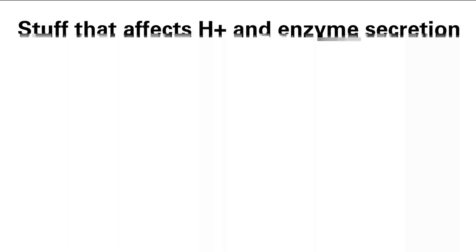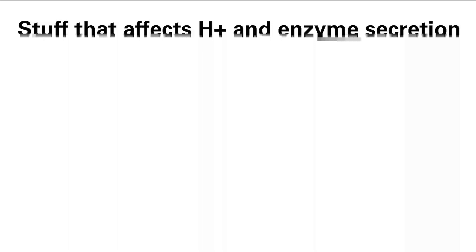The very first substance is gastrin. Gastrin is released from G cells — G for gastrin — in the gastric antrum as well as the duodenum. The function of gastrin is to improve digestion, and it does that in two ways: it increases H-plus secretion in the stomach, and it improves gastric motility to get things through the GI tract.